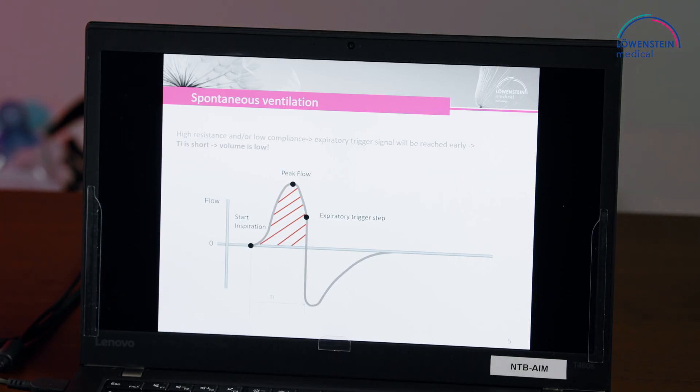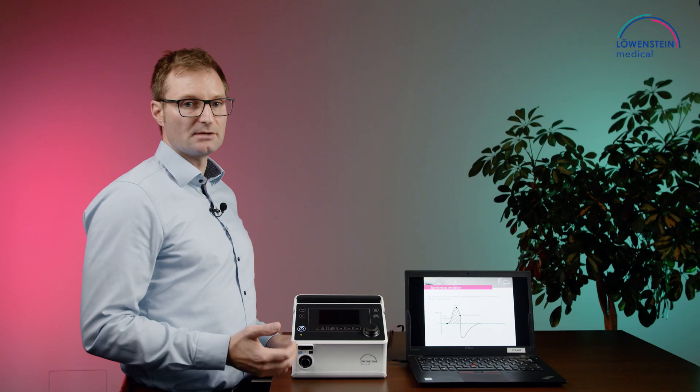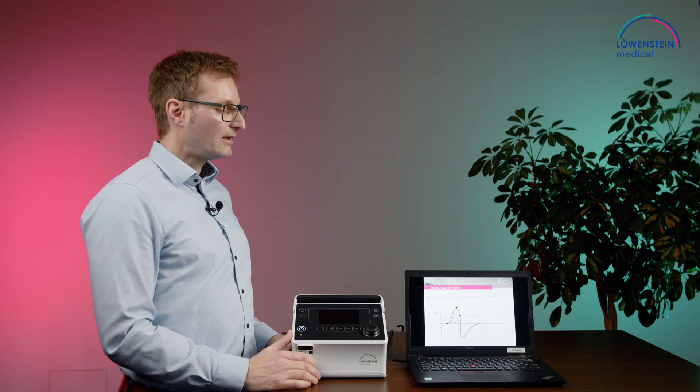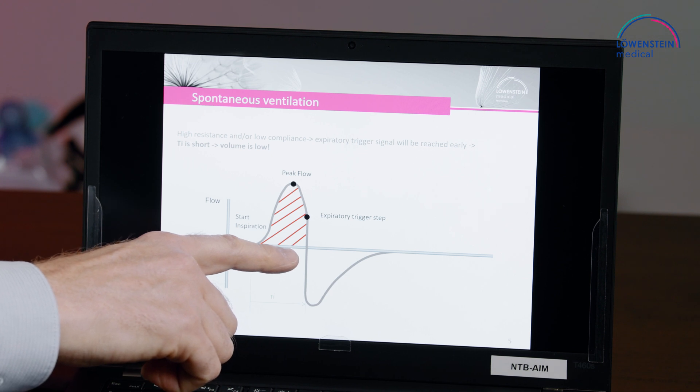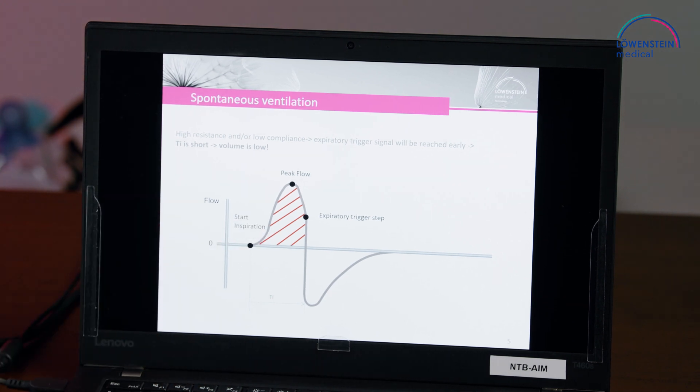When a patient has a high resistance and low compliance, then the peak flow will be reached very fast. And by doing so, or by reaching the peak flow very fast, then the expiratory trigger step is reached very fast. And that means that the volume, and the volume is the integral below the flow curve, so the volume will be very low.